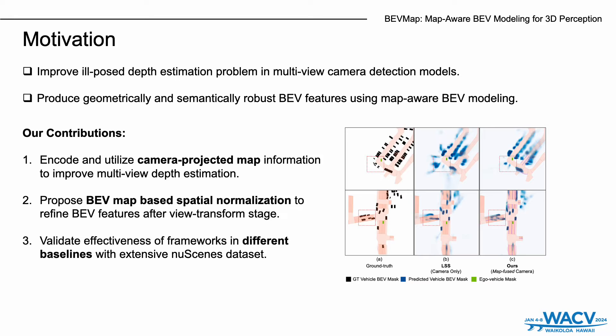In this work, we aim to mitigate depth uncertainty and build geometrically and semantically robust BEV features by leveraging map information. We encode and utilize camera-projected map information to improve multi-view depth estimation, and we propose BEVMAP-based spatial normalization to refine BEV features after the view-transform stage. We validate the effectiveness of our framework on different baselines using the extensive nuScenes dataset.